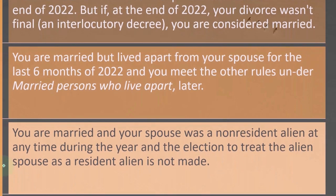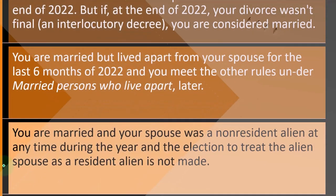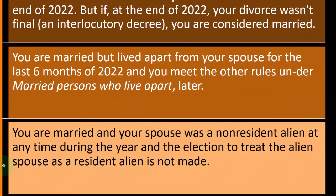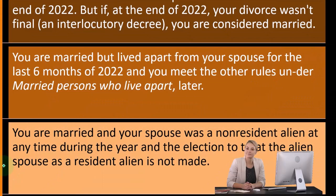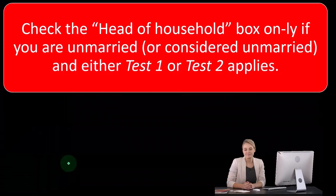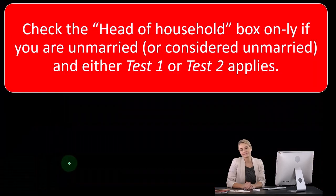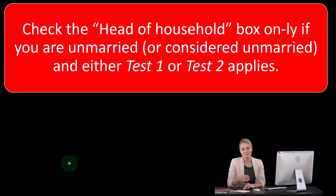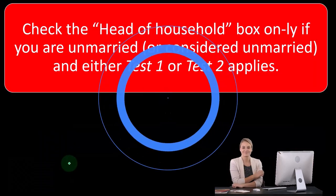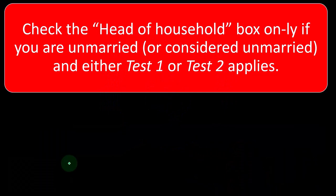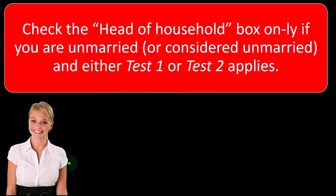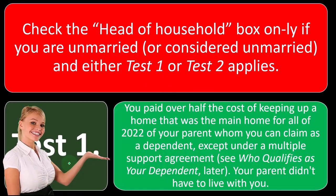You are also considered unmarried if you are married and your spouse was a non-resident alien at any time during the year and the election to treat the alien spouse as a resident alien is not made. Check the head of household box only if you are unmarried or considered unmarried and either Test 1 or Test 2 applies.